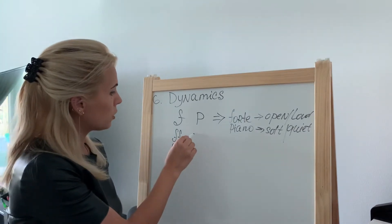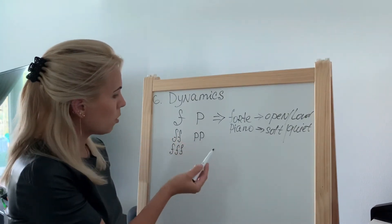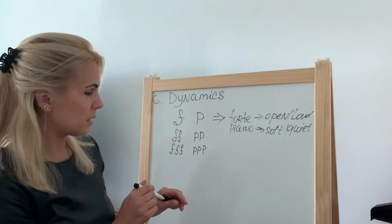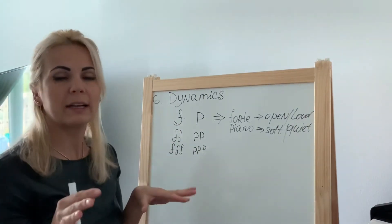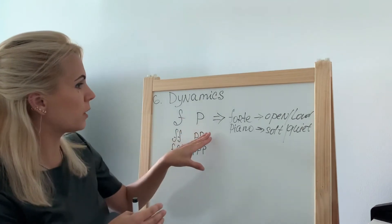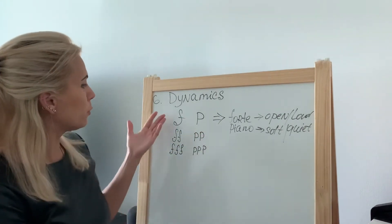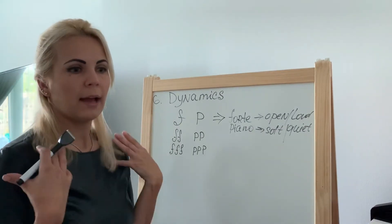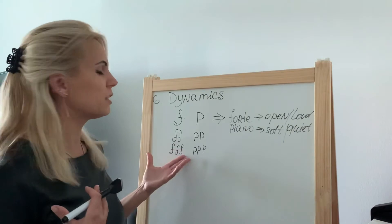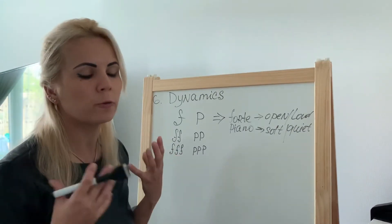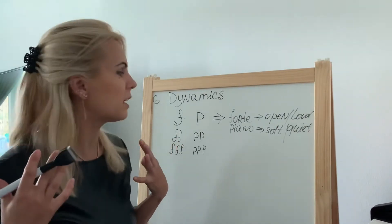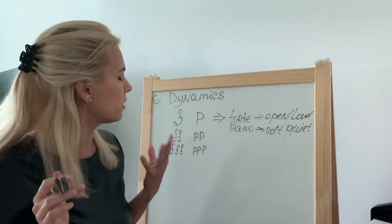Similarly, you can see pianissimo — double piano — or triple piano. These symbols are similar to forte and piano, however the extent of being open and loud, or soft and quiet, increases. Fortissimo is a really powerful voice, and when you have triple forte, that is your highest possible extent of loudness — a super powerful sound.